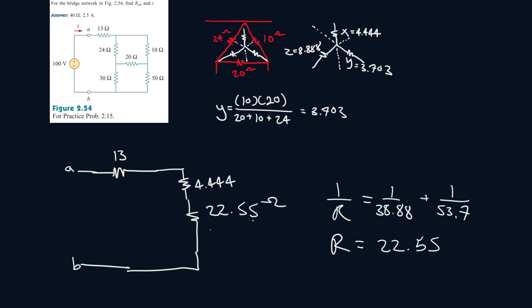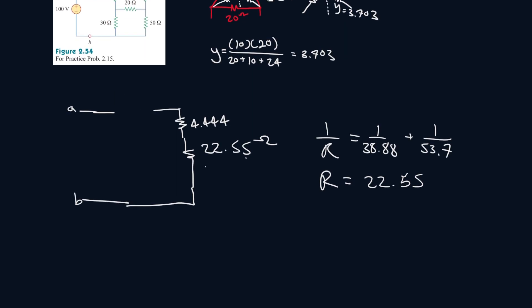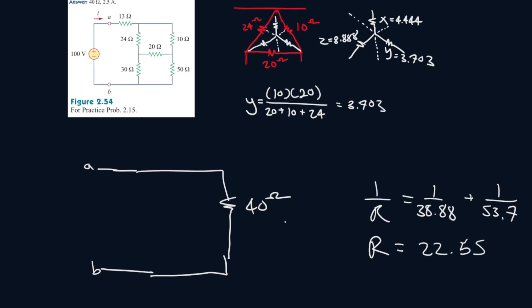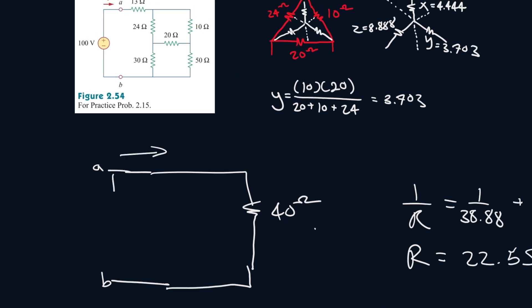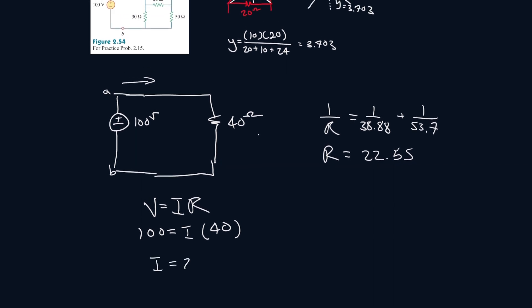Now let's combine all of these together: 22.55 plus 4.444 plus 13, and we get roughly 40 ohms. That's the equivalent resistance between AB. Now let's find the current — including the 100-volt battery source: V equals IR, so 100 equals I times 40, giving us I equals 2.5 amps.